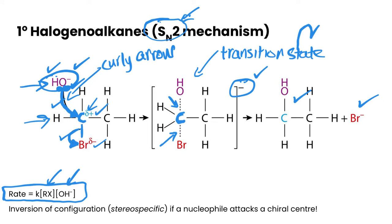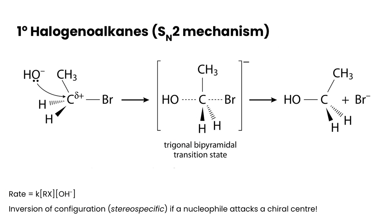Now what's really neat about this mechanism is that if this carbon that is being attacked by the nucleophile, so this particular carbon here, if it was stereo specific, then the nucleophile is attacking a chiral center and we get something called inversion of configuration. And so what does that mean? What does that look like? Well.